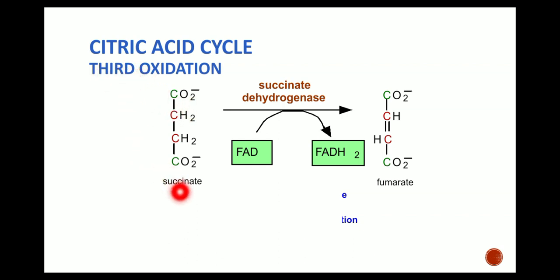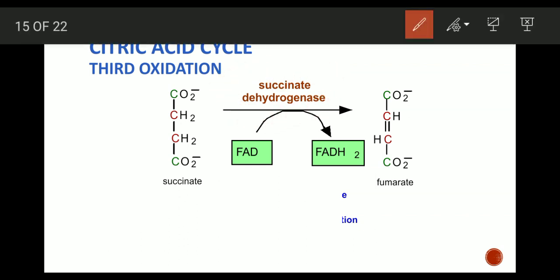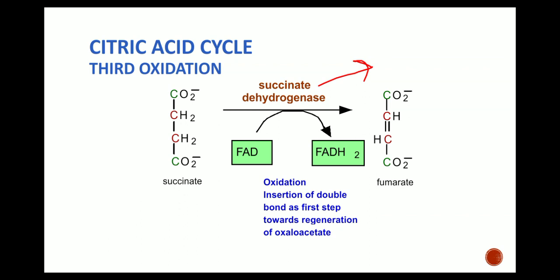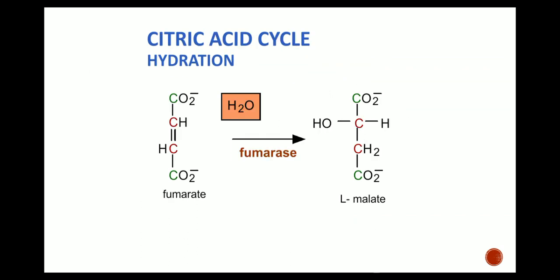In the third oxidation step, succinate is converted into fumarate. The hydrogen binds with FAD, which is the hydrogen acceptor here, forming FADH2, with the help of the enzyme succinate dehydrogenase. This enzyme is important because it is present in the inner membrane of the mitochondria, not in the matrix. As hydrogen is removed, a double bond forms in fumarate.